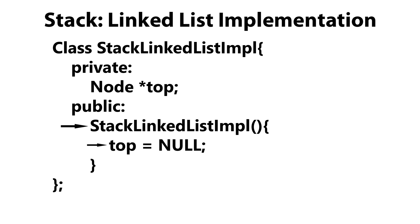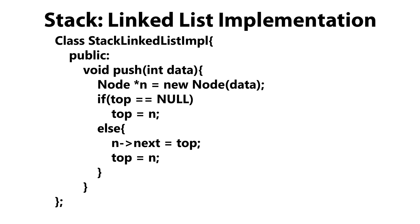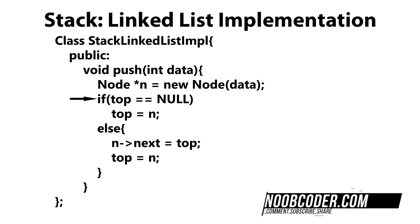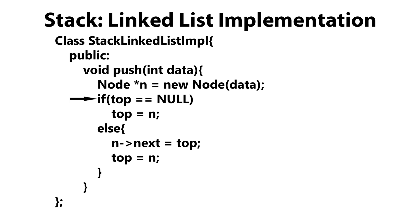Now let's move on to the push method. The push method takes in data, and with that data we create a new node to be inserted at the top of the stack. First, we check whether the stack is empty. If top is equal to null, then top is going to point to n, so n becomes the top of the stack. Otherwise, we have n's next pointer point to top, and then top points to n.